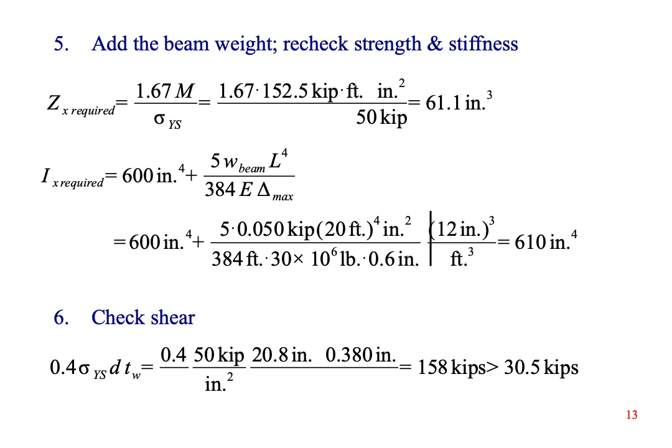The next thing to check is the stiffness of the beam. We'll add the moment of inertia needed to support the applied load to the moment of inertia needed to support the beam weight. The total is 610 inches to the fourth power. We have 984 inches to the fourth power in our beam. We only need 610 inches to the fourth power to support the loading. We have more than we need, so the beam is stiff enough to meet the deflection constraint.